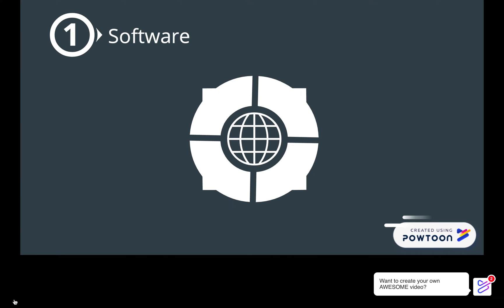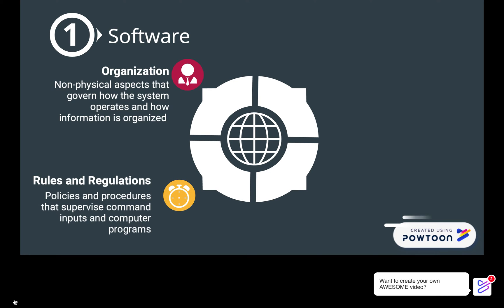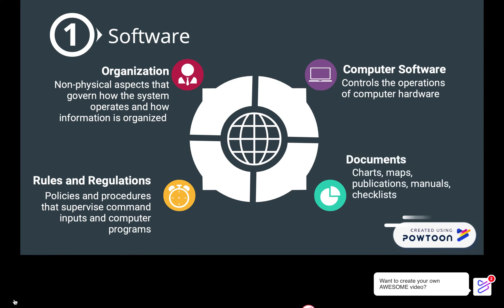The software includes the organization and the aspects that govern the system: rules, regulations, policies, and procedures, the computer software itself, and other documents like charts, maps, publications, manuals, and checklists.